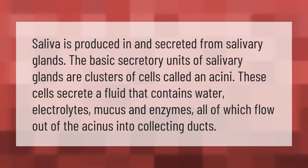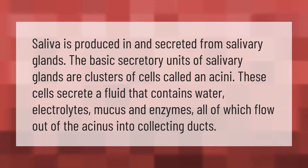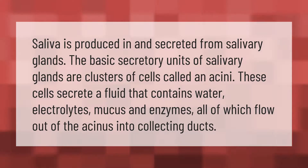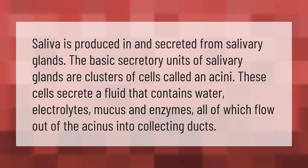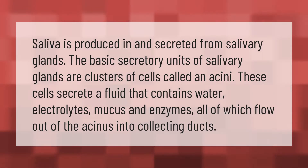Saliva is produced in and secreted from salivary glands. The basic secretory units of salivary glands are clusters of cells called acini. These cells secrete a fluid that contains water, electrolytes, mucus, and enzymes, all of which flow out of the acinus into collecting ducts.